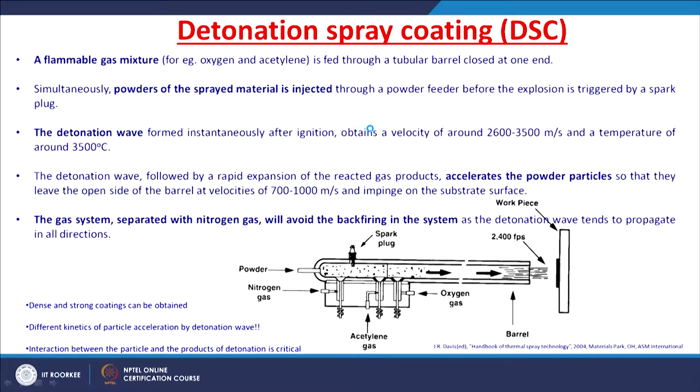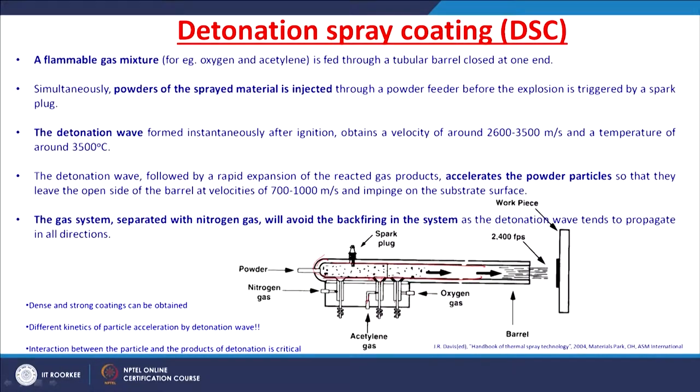Detonation spray coating is useful for coating ceramics, metals, or polymers onto a substrate. A flammable gas mixture — for example, oxygen and acetylene — is fed through a tubular barrel closed at one end. Simultaneously, the powder of the sprayed material is injected through a powder feeder before the explosion is triggered by a spark plug. Once ignited, a detonation wave forms instantaneously, obtaining a velocity of 2,600 to 3,500 meters per second at temperatures around 3,500°C.